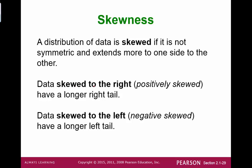A data set that is skewed to the right will have a longer tail on the right side. Conversely, skewed to the left will have a longer tail on the left.